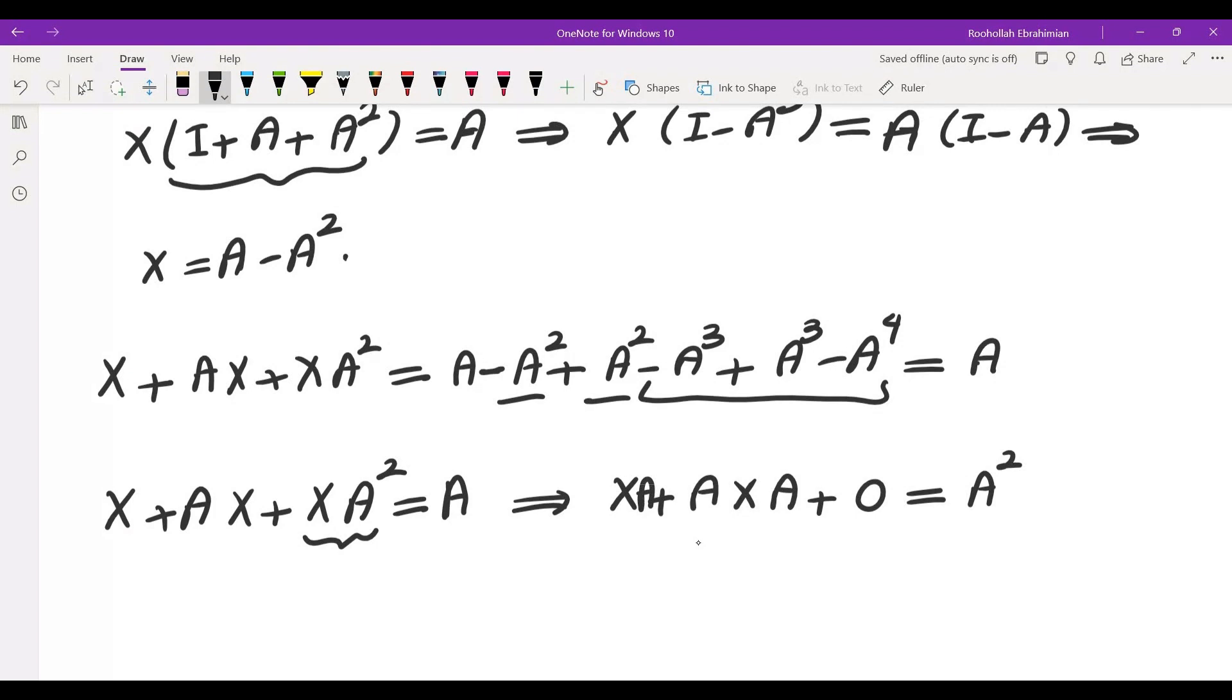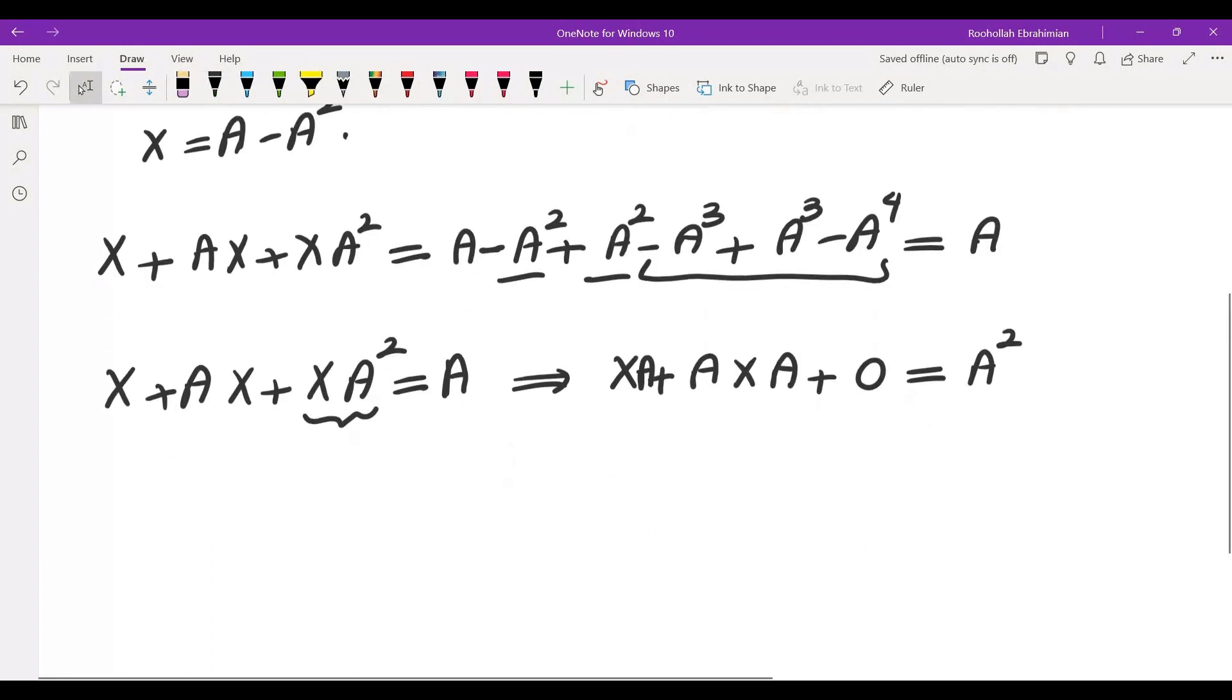If you multiply both sides by A from the right you get this equality. Now that means I can factor XA from this side, so I would get I plus A from the right. I can factor XA and that equals A squared.